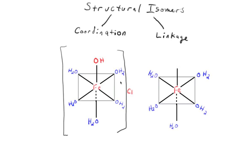I would like to draw the structural isomers and the example I'm going to use are the coordination isomers. In this case, we have iron 2 in the middle.